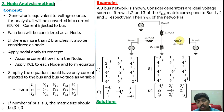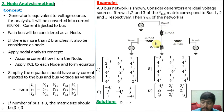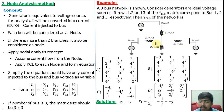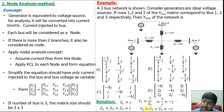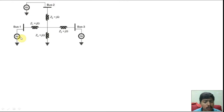Here impedance is given, so we have to convert impedance into admittance. Z1 = j, so Y1 = 1/Z1 = −j. Similarly Z2, Z3, Z4 all have the same value j, so Y2 = Y3 = Y4 = −j. These may also be written as small y values. For the node analysis concept, the first step is to convert the generator into an equivalent current source. Here the generator is considered as an ideal voltage source. Converting it to a current source with impedance in parallel is the standard Thevenin-to-Norton conversion.